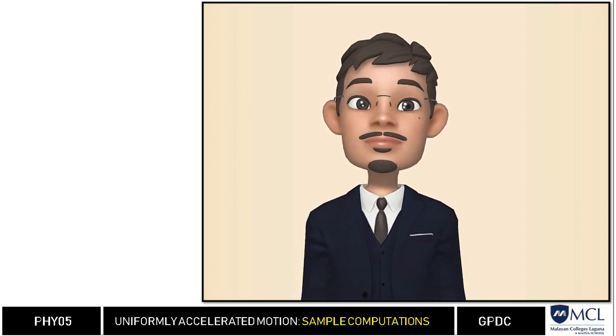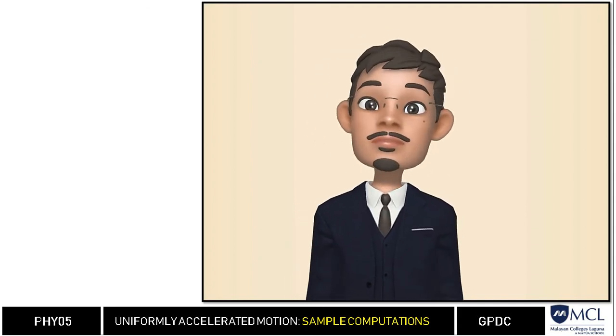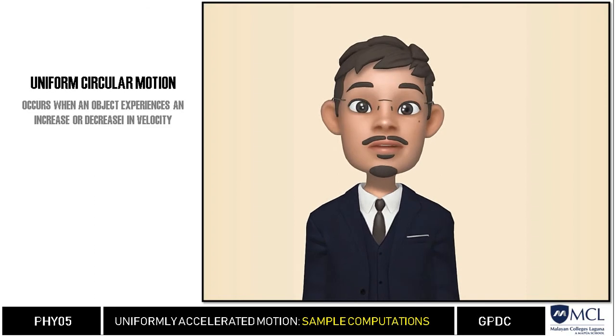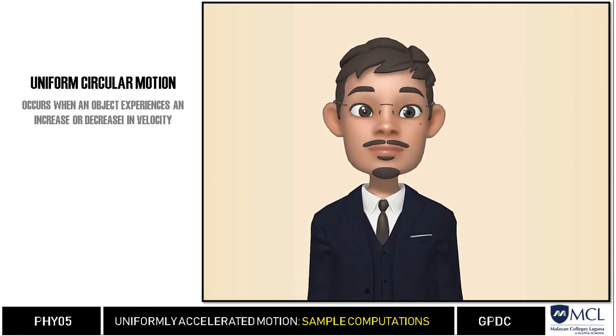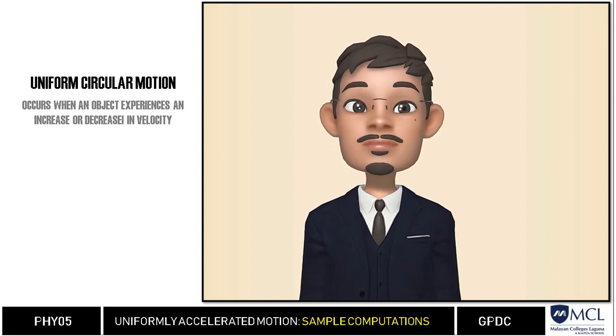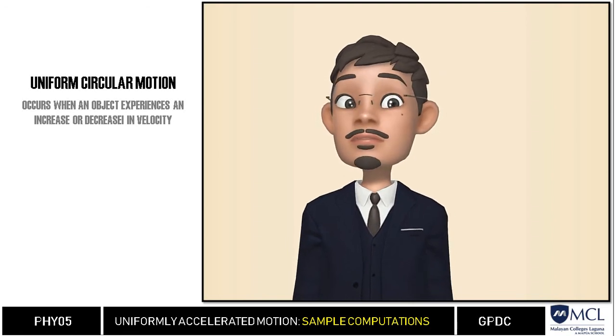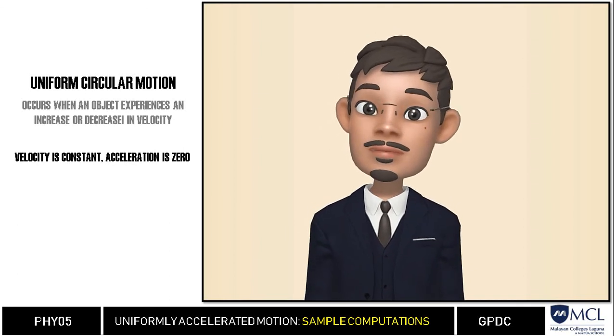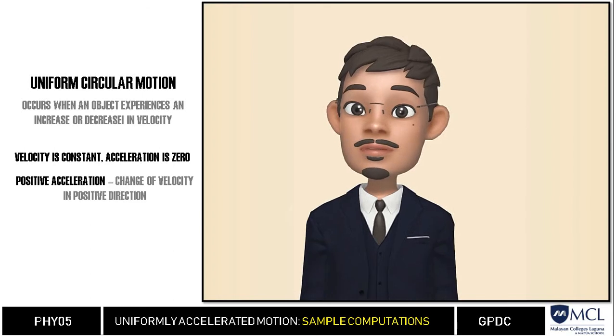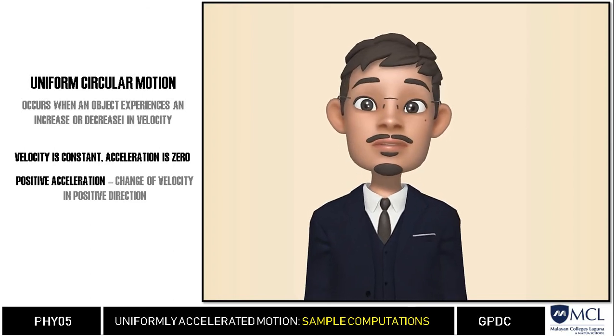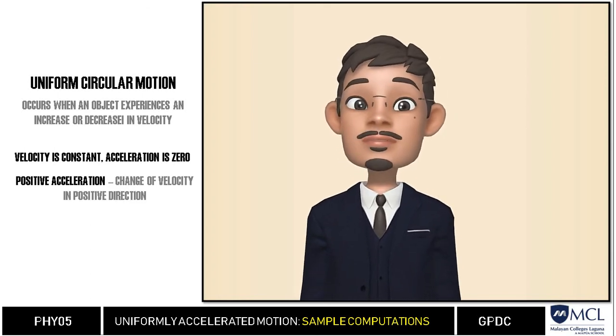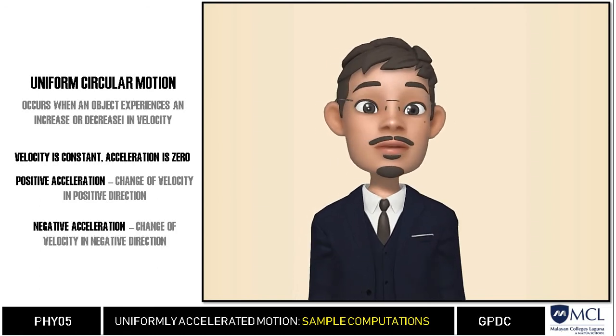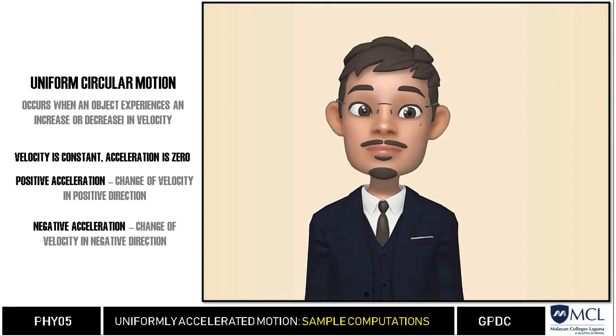To sum up what we had for uniform acceleration motion, it occurs when an object experiences an increase or decrease in velocity at the same rate throughout the motion. We can summarize this concept as: first, if there is no change in velocity, then the acceleration is zero. If the acceleration and velocity are both in the positive direction, the body is moving in positive uniform acceleration. Then if velocity and acceleration are opposite with one another, we can say that the body is moving with a negative uniform acceleration.